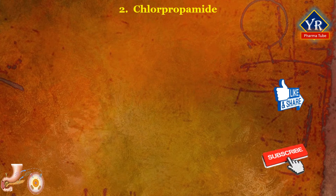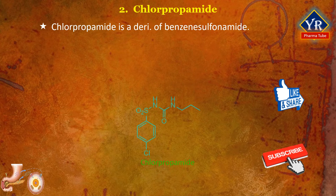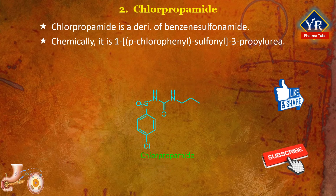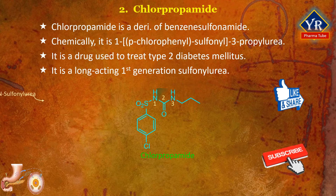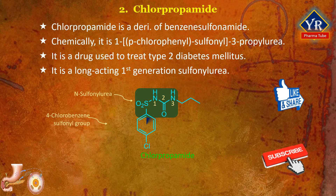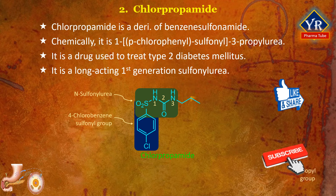The next drug is chlorpropamide. Chlorpropamide is a derivative of benzene sulfonamide. Chemically, it is 1-para-chlorophenyl sulfonyl-3-propylurea. It is a drug used to treat type 2 diabetes mellitus. It is a long-acting first generation sulfonylurea. It is an N-sulfonylurea in which a hydrogen attached to one of the nitrogens is substituted by a 4-chlorobenzene sulfonyl group and a hydrogen attached to the other nitrogen is substituted by a propyl group. It is an N-sulfonylurea and a member of monochlorobenzenes.